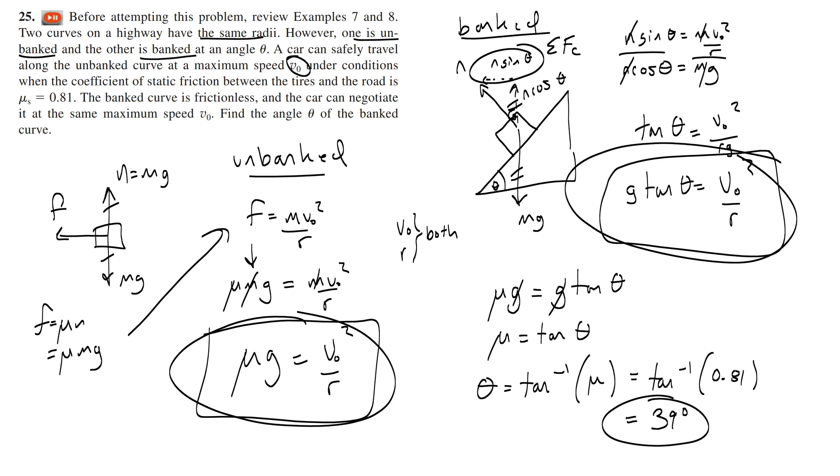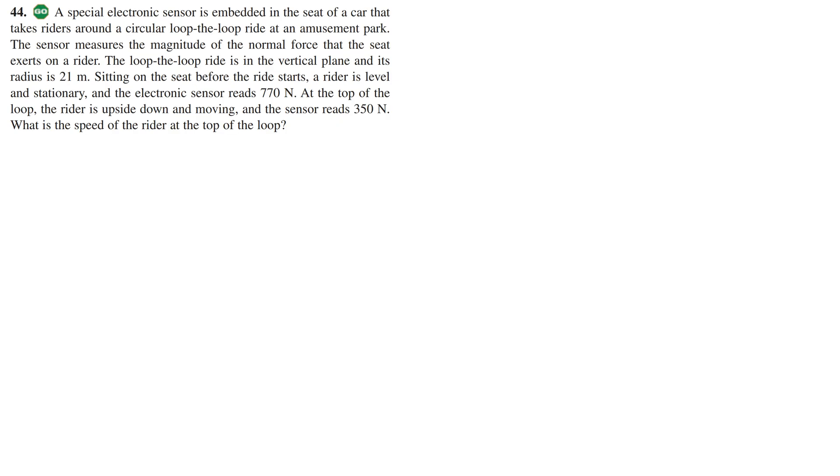All right now let's take a look at some of your vertical circle problems. We're going to start with 44. Now hopefully you've already attempted 44 and so I don't have to restate it too much but essentially you have a loop-de-loop, right? A vertical circle and the key thing to know is that the electric sensor is basically like a scale and what the scale is measuring is your normal force.